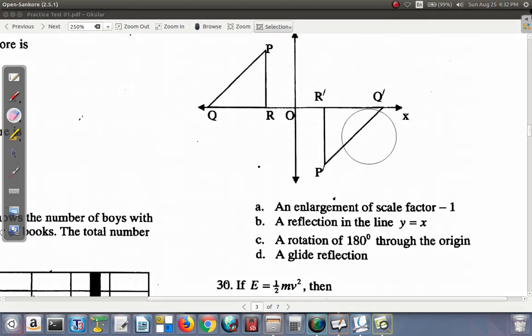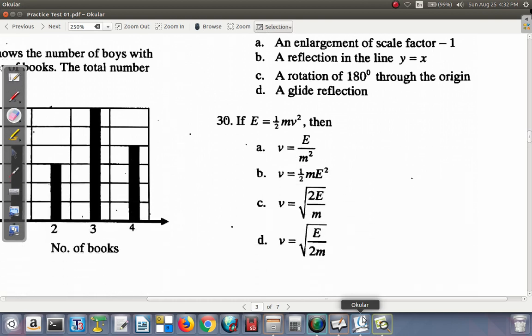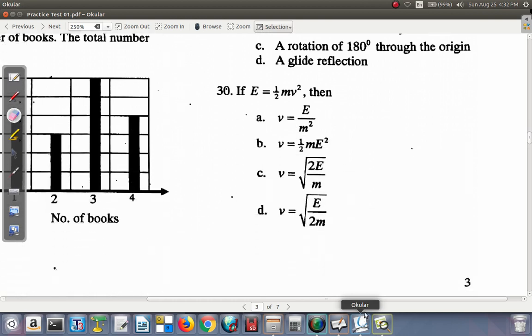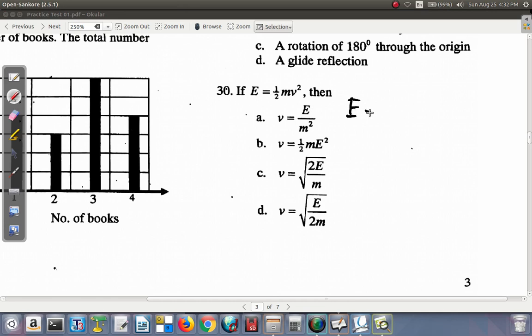Let's look at question 30. See what it says. If E is equal to half MV squared, then they want what V is equal to. Let's see how you could deal with this.